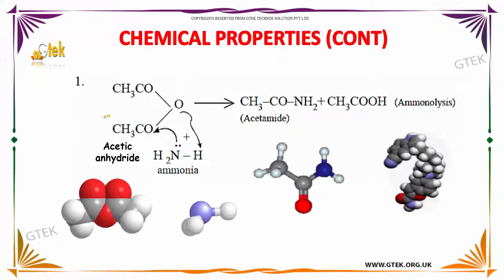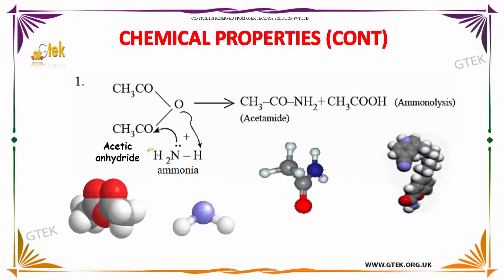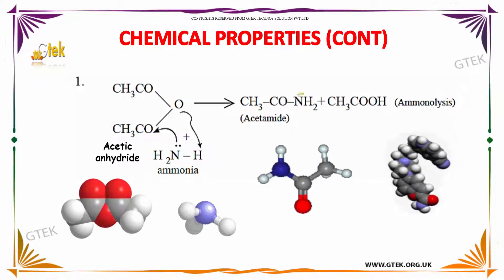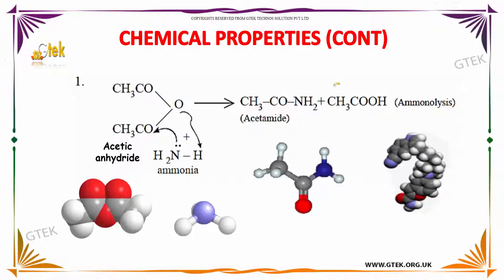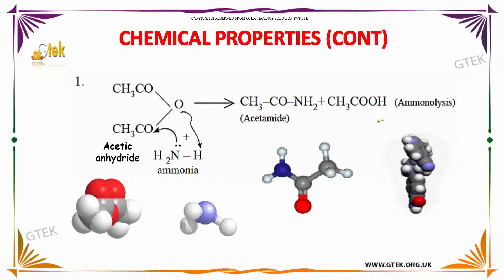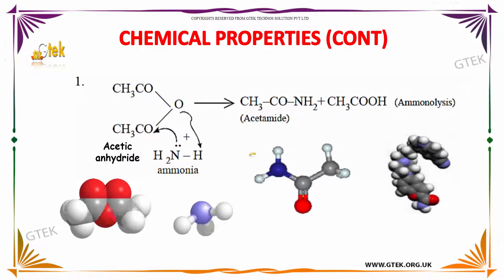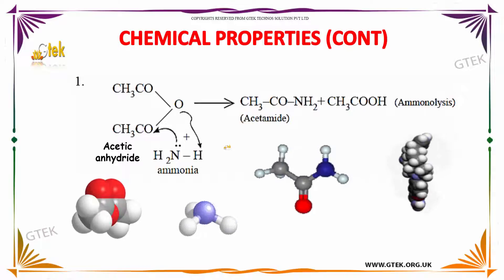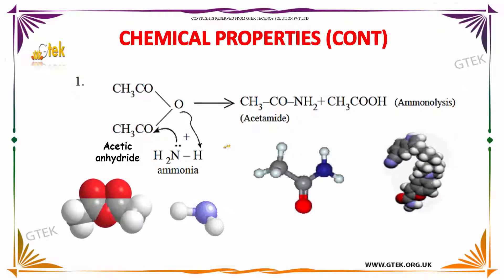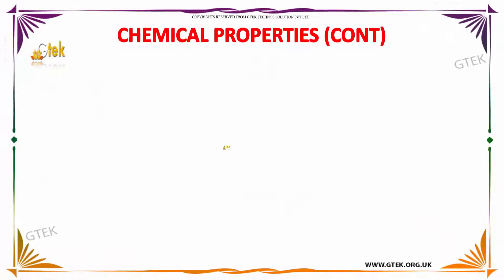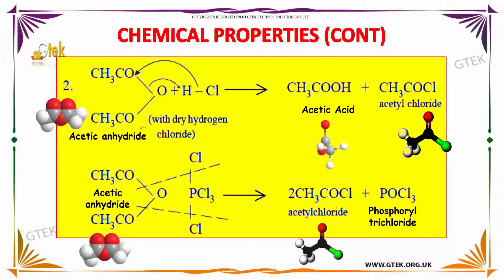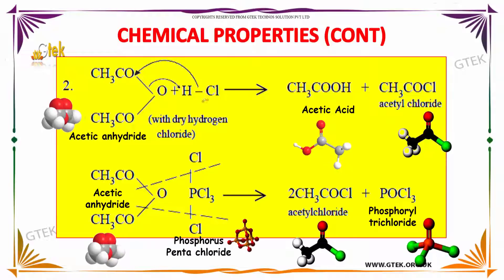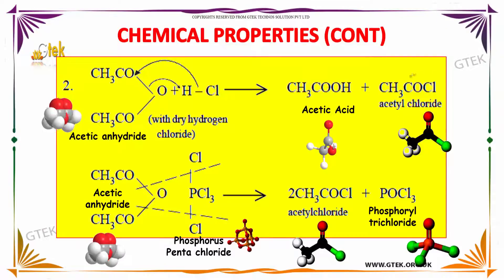The reaction of acetic anhydride with ammonia results in the formation of acetamide and CH₃COO⁻, which is nothing but acetic acid. When acetic anhydride is made to react with hydrochloric acid, it produces acetic acid along with acetyl chloride.